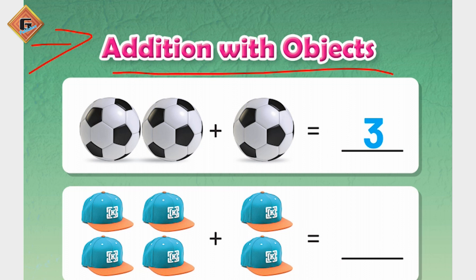Cheezo ko kis tarah se? In objects ko, in pictures ko count karke. As you can see, we are having one, two - two balls. When we add the third object, one more object, then how many will it be? Three - one, two, and three. When we have two balls and we add one more ball, then it will be three.